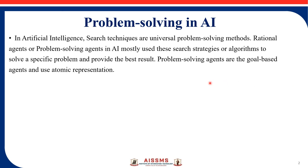Next, the problem solving in AI — artificial intelligence search techniques are universal problem solving methods. Rational agents, or problem solving agents in AI, mostly use these search strategies or algorithms to solve a specific problem and achieve the goal. Problem solving agents are goal-based agents and use atomic representation.